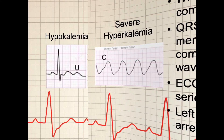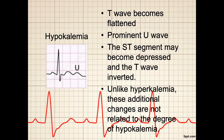On the other hand, with hypokalemia, the T waves become flattened, there is a more prominent U wave, the ST segment may become depressed, and the T wave may become inverted. Unlike hyperkalemia, these additional changes are not related to the degree — that is, how much hypokalemia exists.